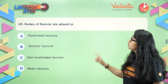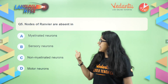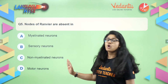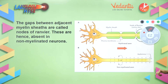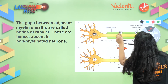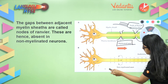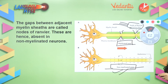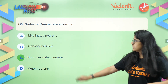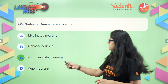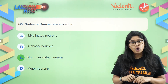Question number five. Nodes of Ranvier are absent in which of the following: myelinated neurons, sensory neurons, non-myelinated neurons, or motor neurons? If you look carefully, the gap you see is the node of Ranvier. These nodes are present in myelinated axons but are not present in the non-myelinated axons. This membrane helps in the conduction of the nerve impulse. So the right answer is option C — the non-myelinated neurons.